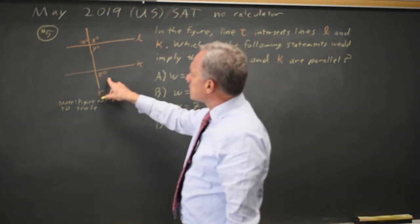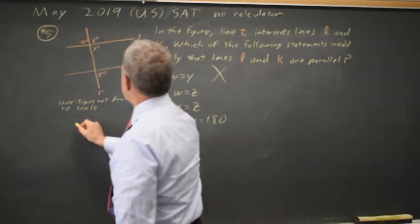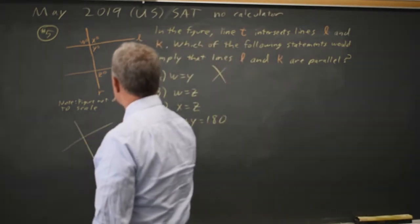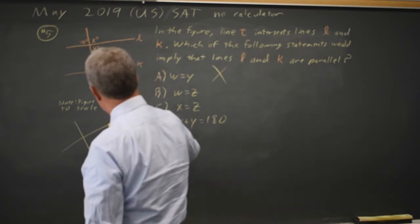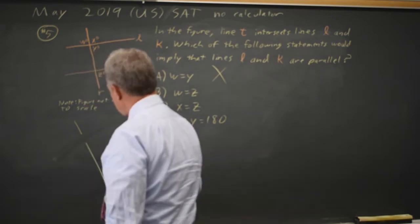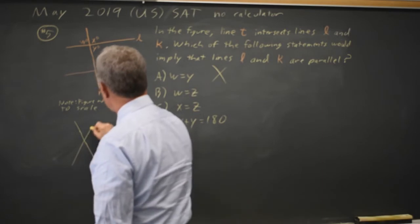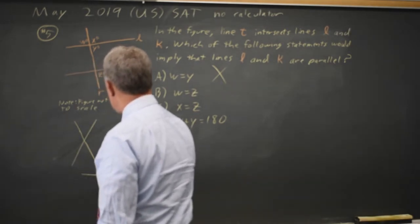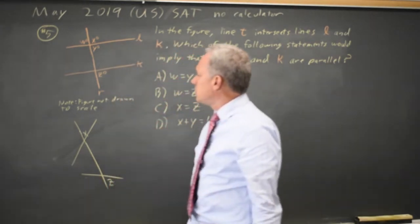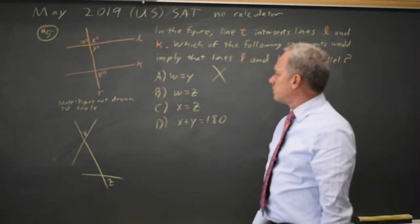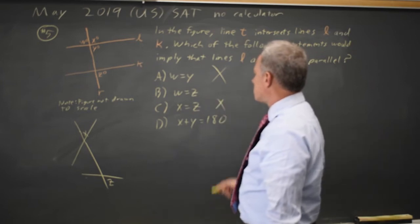If X equals Z, let's redraw it. Redraw their diagram like this, where this is X and this is Z. Even if X equals Z, that is not sufficient to prove that they're parallel, so choice C is wrong.